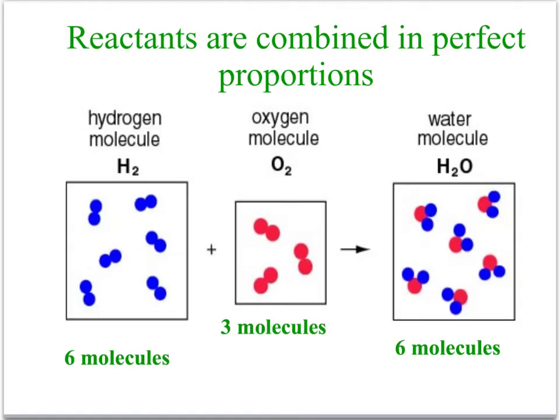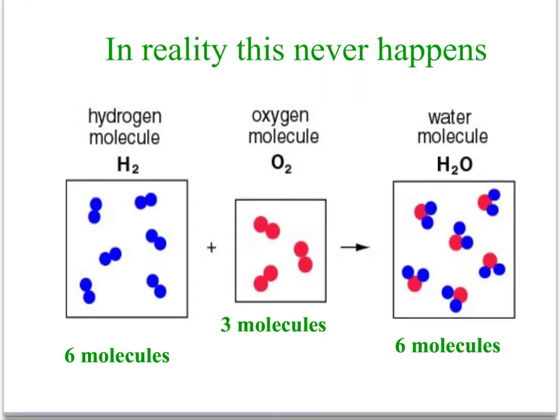Here we see what we just mentioned: six molecules of hydrogen, three molecules of oxygen, producing six molecules of water. These reactants are combined in perfect proportions — exactly the right amount of hydrogen, exactly the right amount of oxygen, and none is left over. This is a situation where both reactants are what we call limiting. In reality, this never happens. In most reactions in nature or in the laboratory, we usually have one substance that is limiting and one that is excess, and that's why limiting reactant problems are so important.